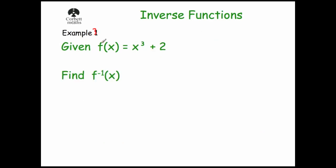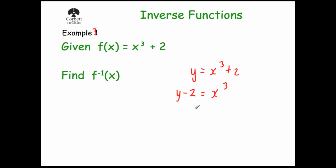Example three: given f(x) = x³ + 2, find f⁻¹(x). Let y = x³ + 2. Subtract 2 from both sides: y − 2 = x³. Now cube root both sides. Be careful — if it were a square root, questions about which values of x and y can work become important; that's more of an A-level topic involving domains and ranges.